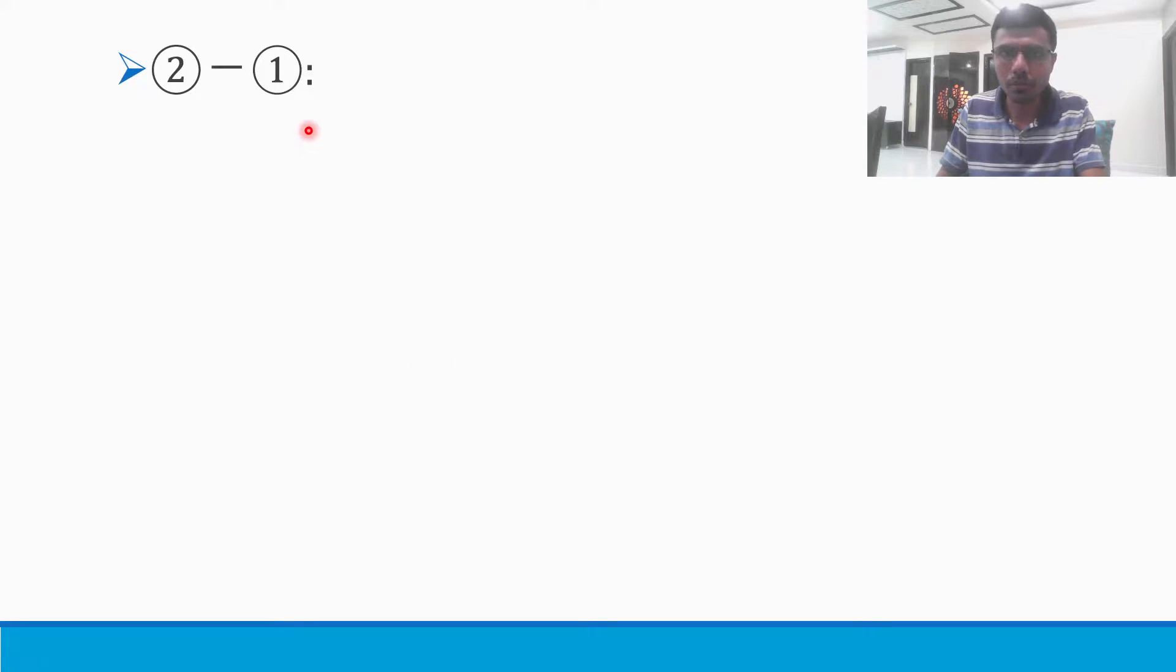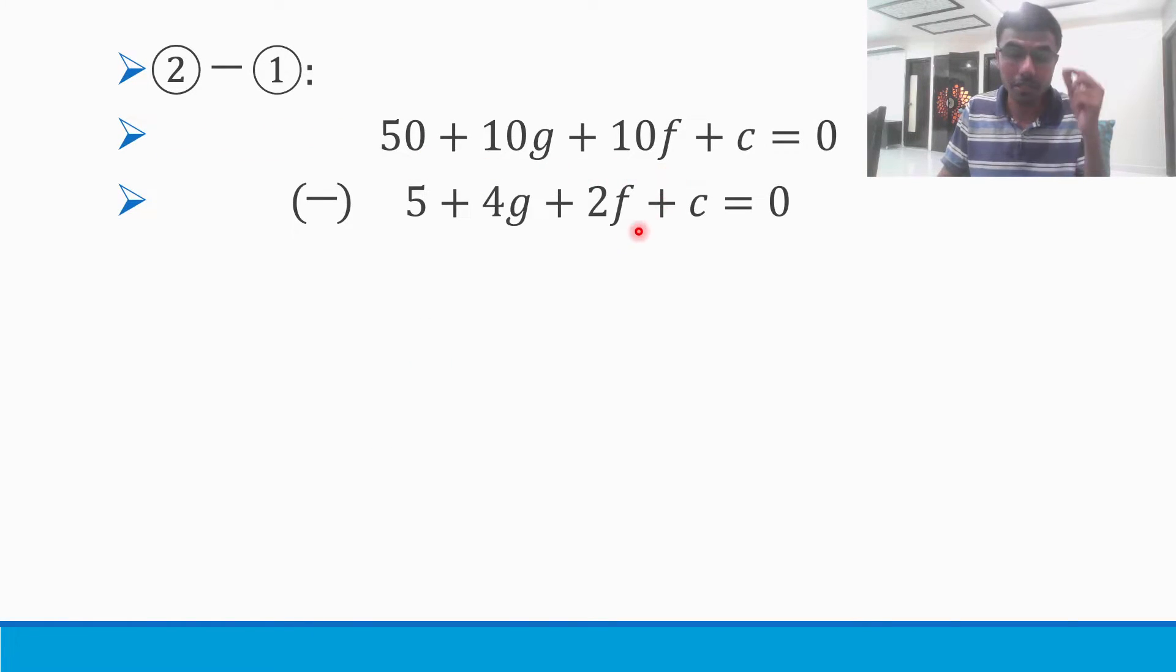So as I mentioned, 2 minus 1. This is my second equation, this is my first equation, just subtract it. You need to understand the sign will change here. So minus is there, it would be applied to all. So 50 minus 5 is 45.